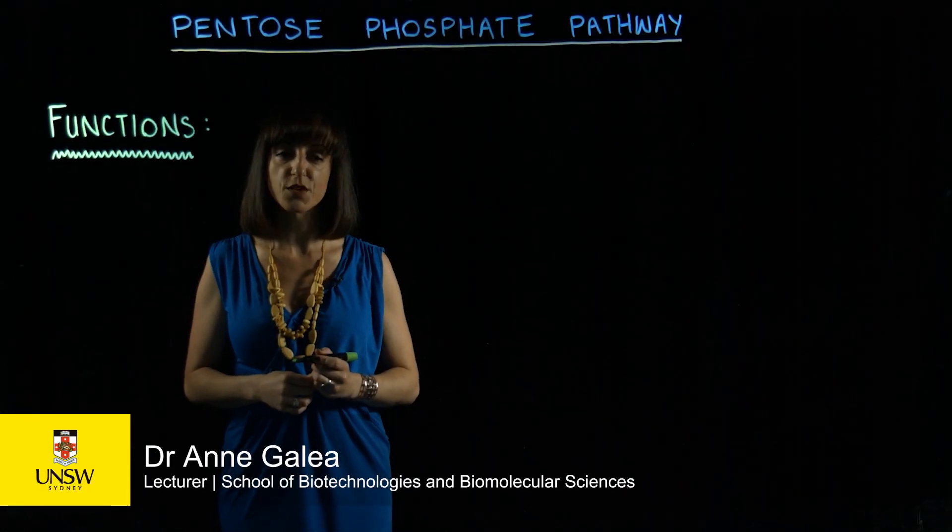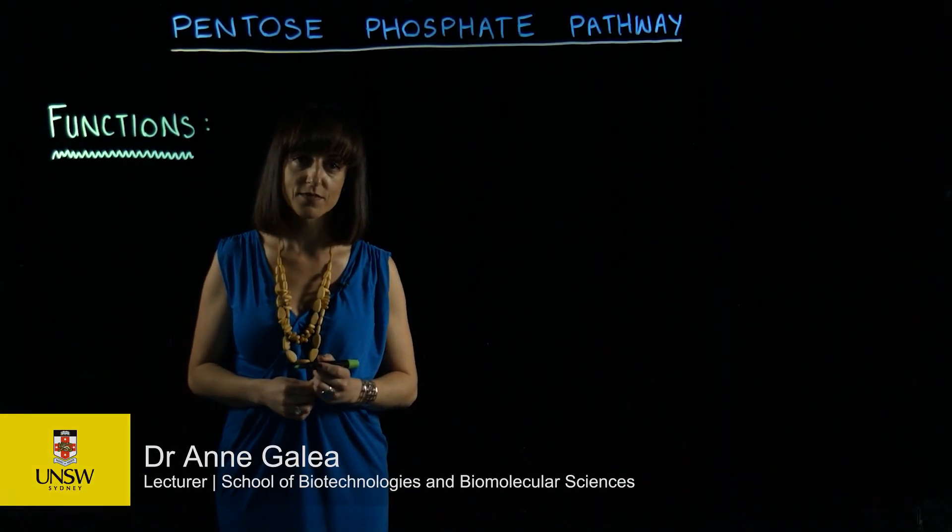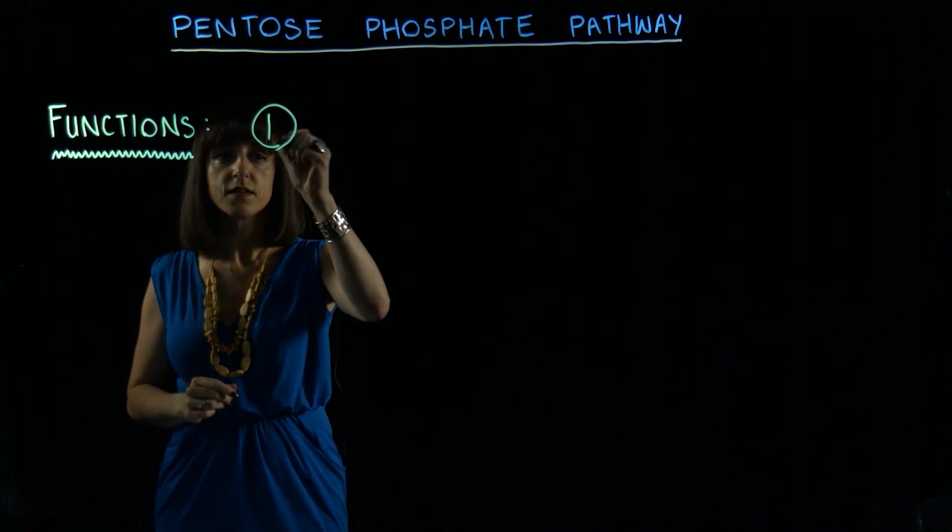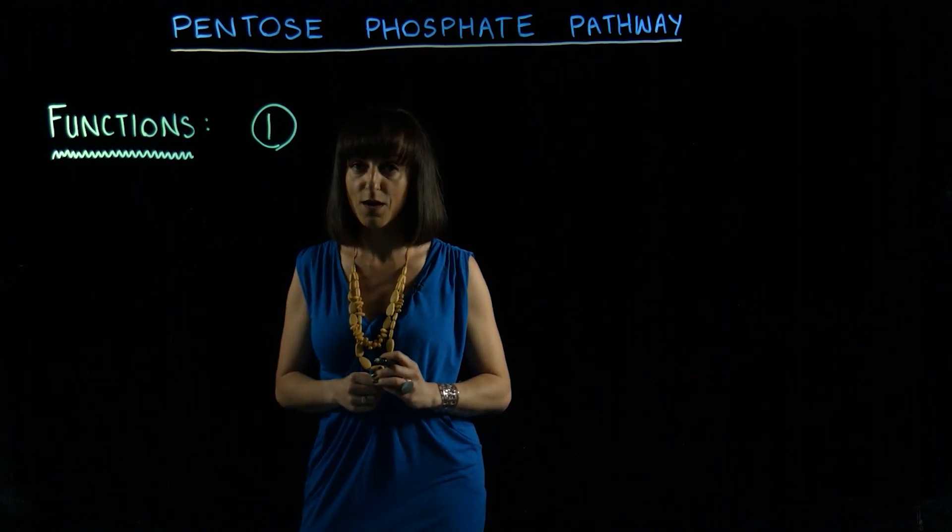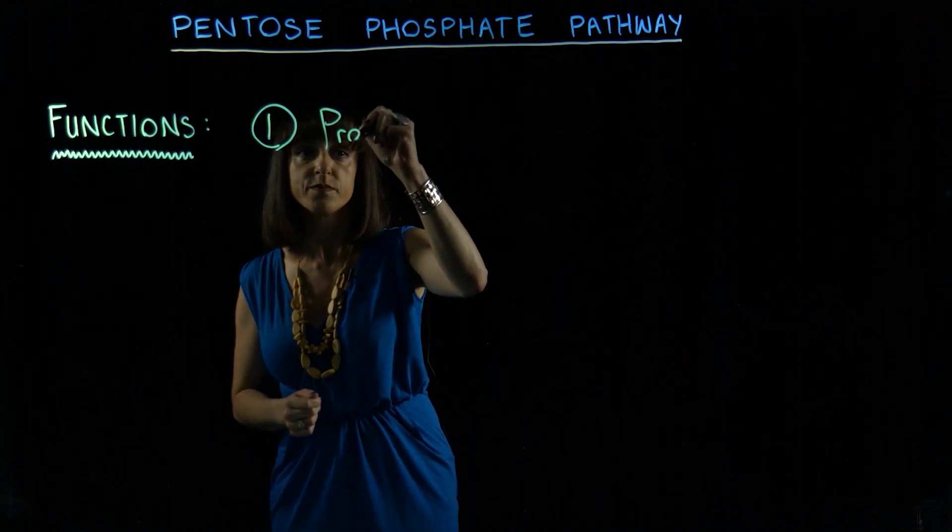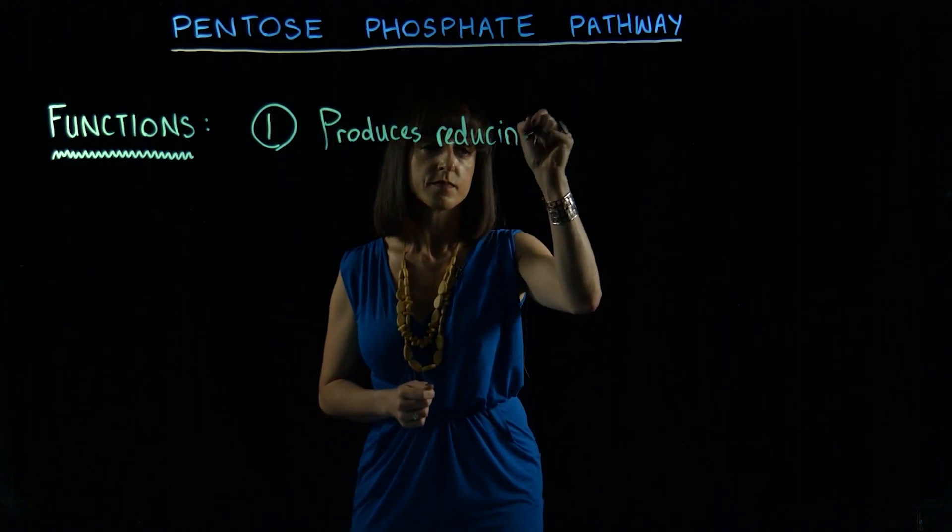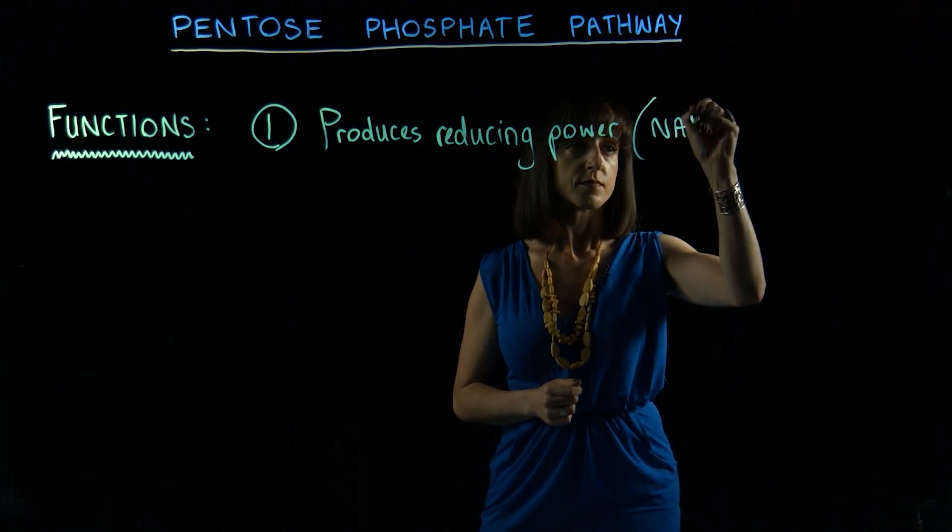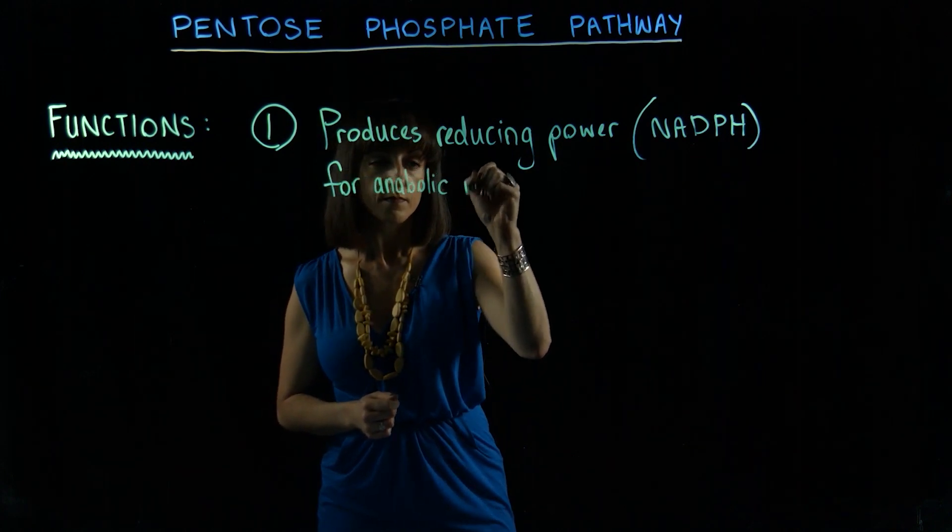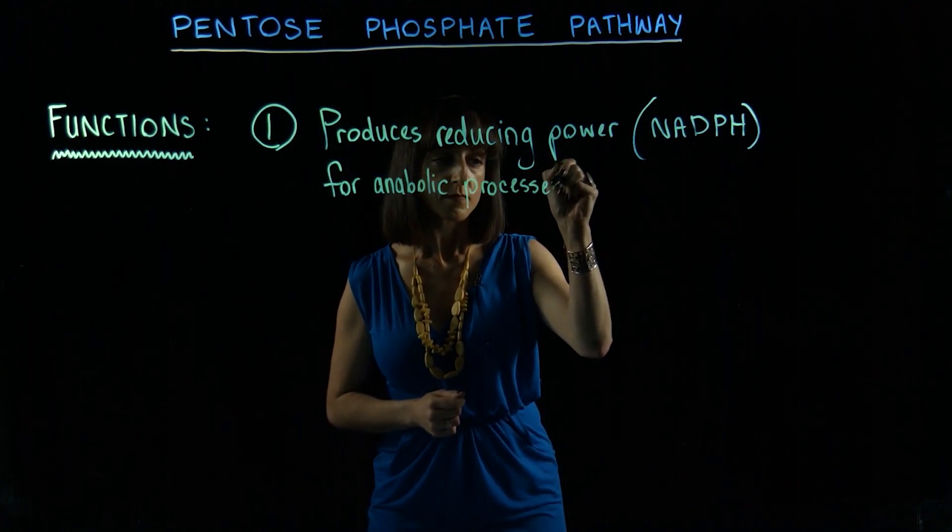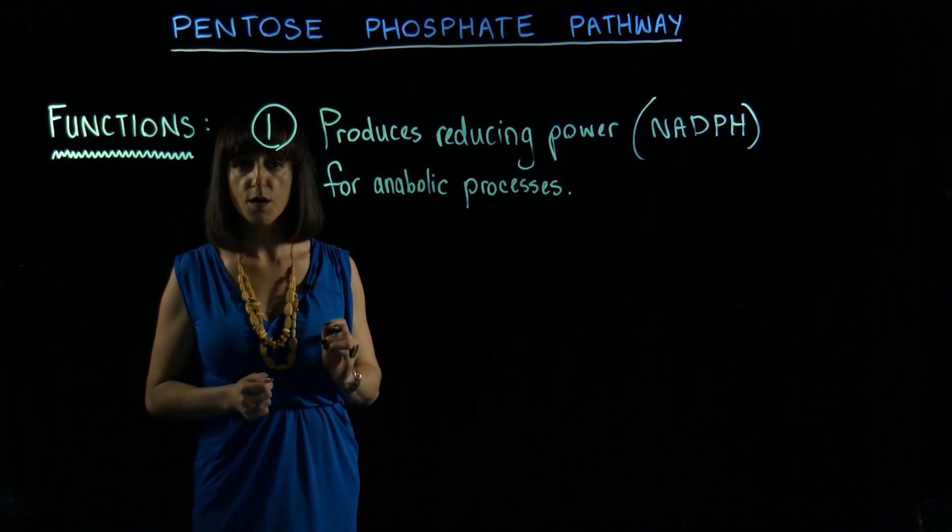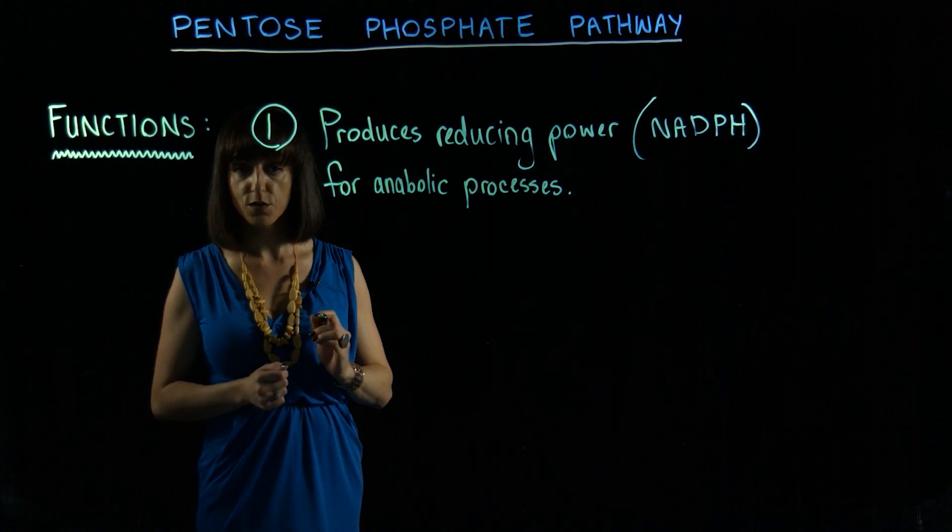Hi, today's lesson is on the pentose phosphate pathway. The pentose phosphate pathway has two really important functions. The first is to produce reducing power in the form of NADPH for anabolic processes in the cell. A really good example of an anabolic process in the cell that uses this type of reducing power is called fatty acid synthesis.